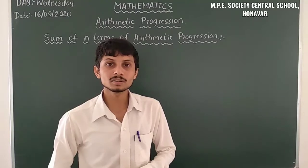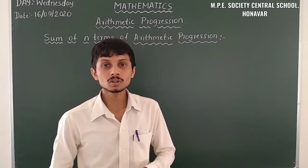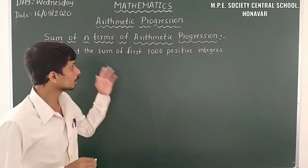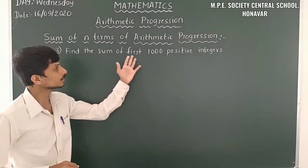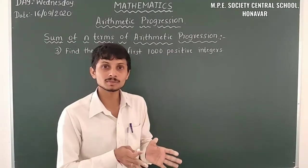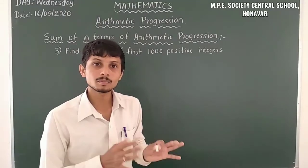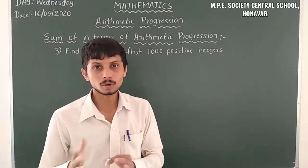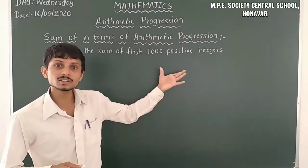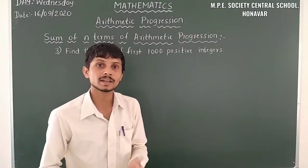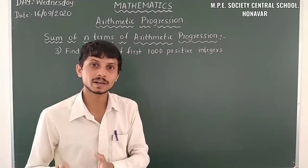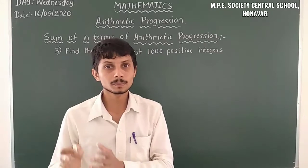So let us move ahead to the same topic and move to the next problem. Find the sum of first 1000 positive integers. This looks like a similar problem that we already did in the last class — that is the sum of first n positive integers. We can find the solution in two ways, as there are two formulas for finding this type of problem.